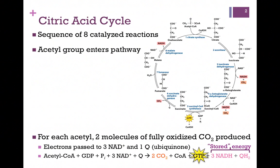For each two-carbon acetyl unit that enters the cycle, we will fully oxidize two carbon atoms to form CO2. The electrons in the process are passed to three NAD+ molecules and one ubiquinone molecule in separate reactions. So in the net, acetyl-CoA enters the cycle. We produce two molecules of CO2, release the coenzyme A molecule, and generate stored energy in the form of GTP, three NADH molecules, and one QH2.